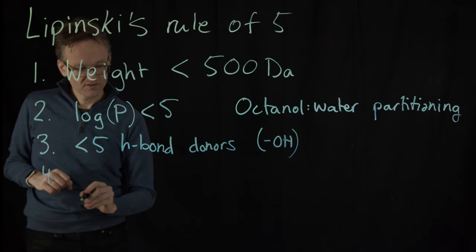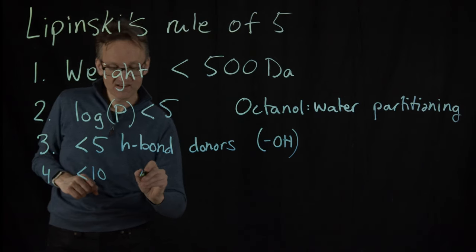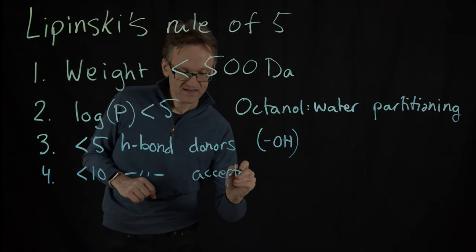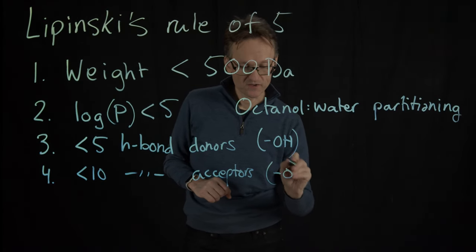And four, there should be less than ten H-bond acceptors. That would just be an O.